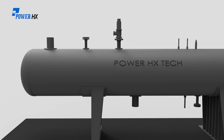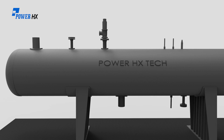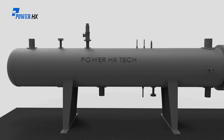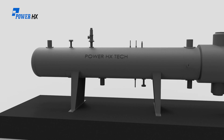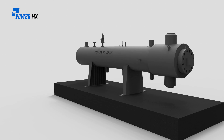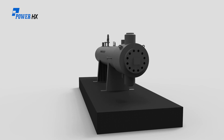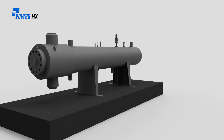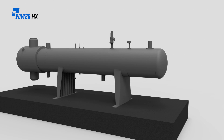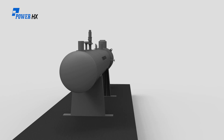A feedwater heater is defined as a shell and tube type unit which heats feedwater or condensate passing through its tubes by means of steam or condensate on the shell side. Feedwater heaters are used in a regenerative steam cycle to improve efficiency. This is accomplished by extracting steam at various points from the turbine and condensing it using boiler feedwater, which reduces fuel consumption.